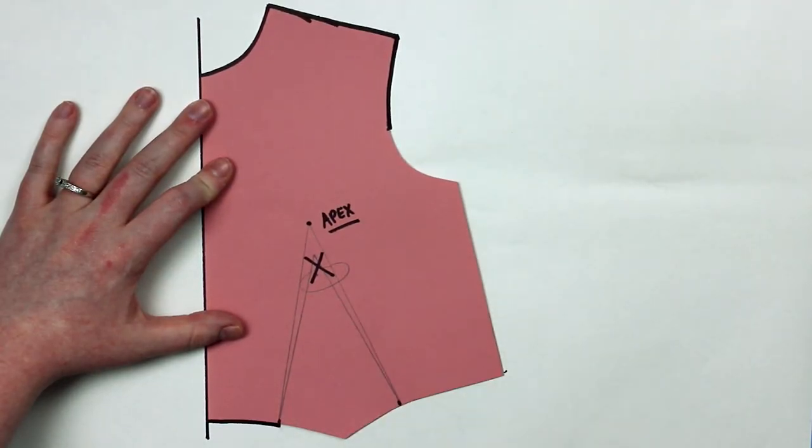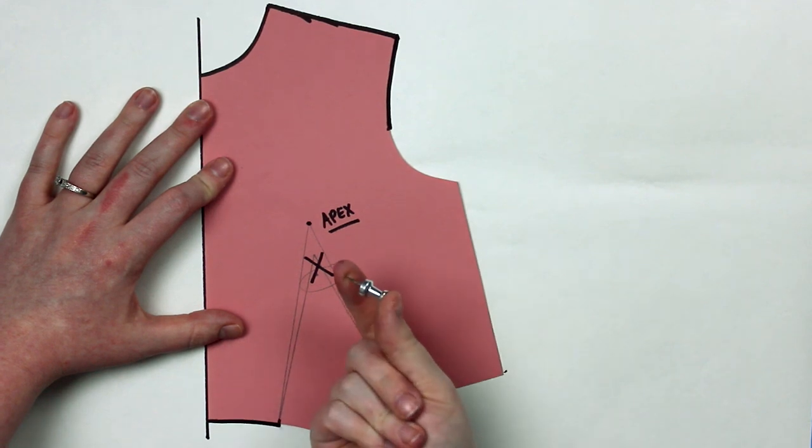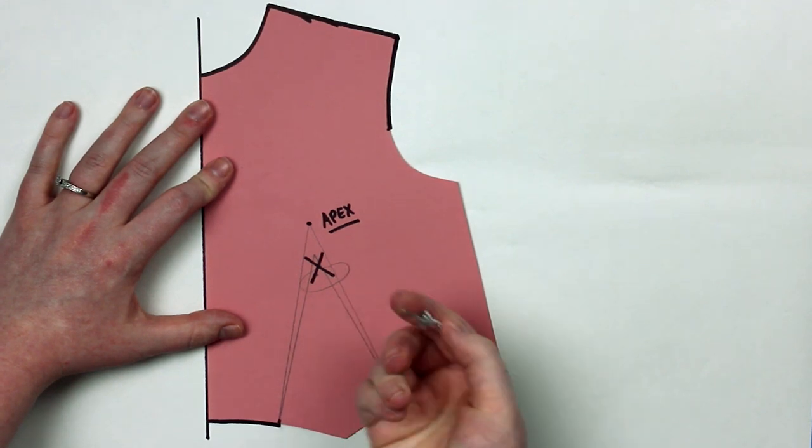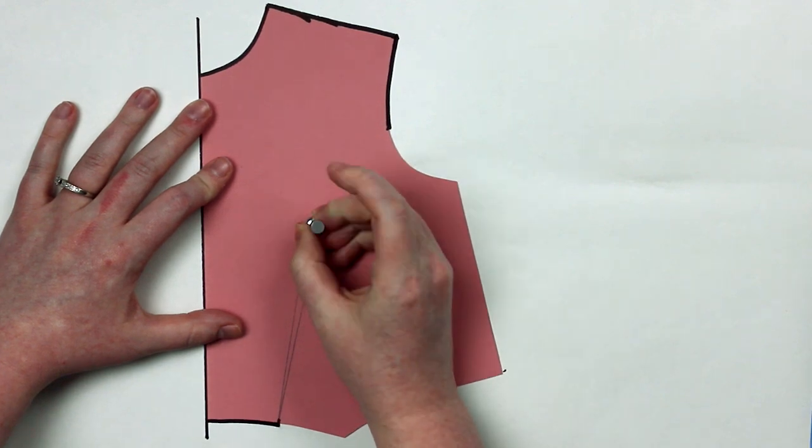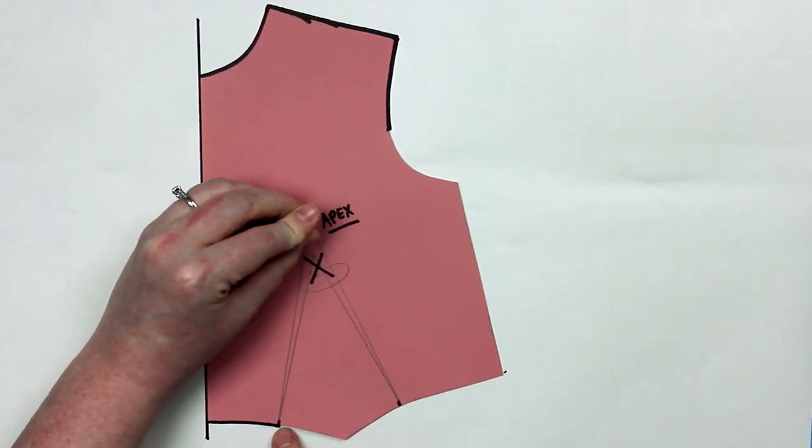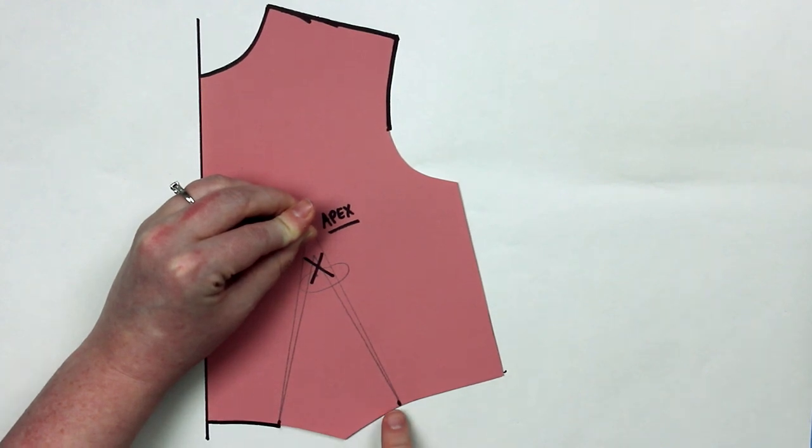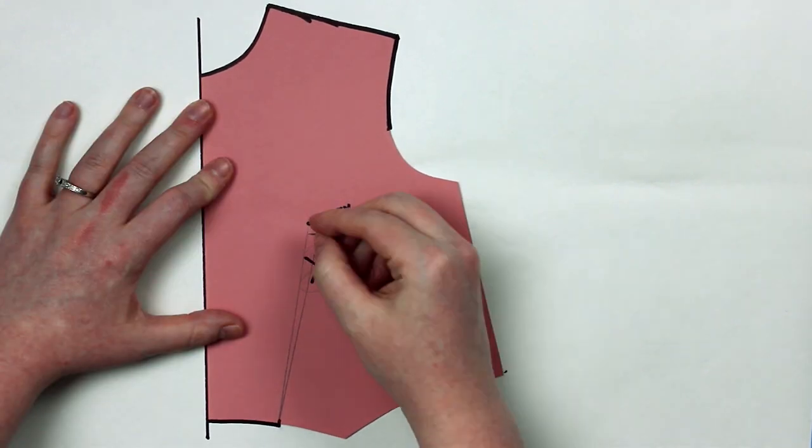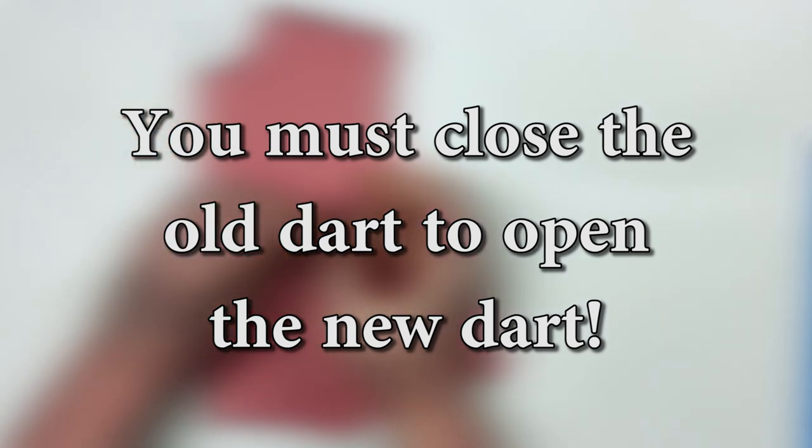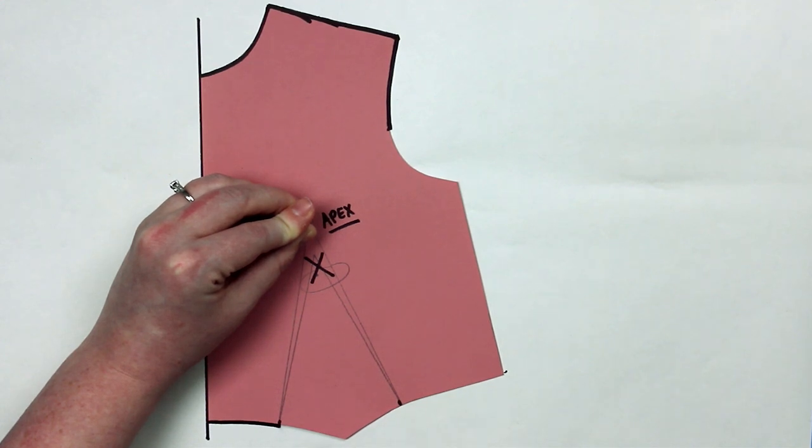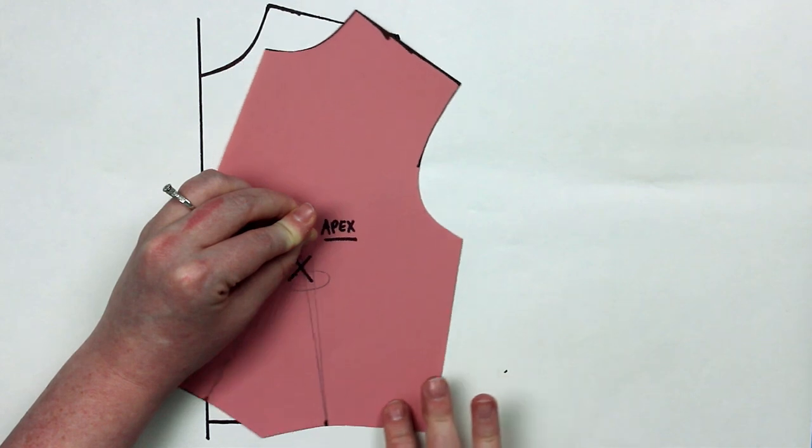Now we're going to take our pushpin and push it through the apex. If you have a cork table then great, you can anchor it to that. If not, just hold onto it really tightly and make sure that it is anchoring the top piece to your paper underneath. Just like before, the only way that we can open up a new dart leg is for us to close our old one. We've already marked the first dart leg onto our fresh sheet of paper, so now we're going to close it by taking the second dart leg and bringing it to that point that we marked.